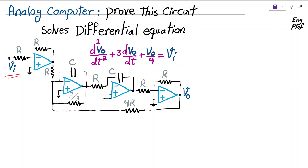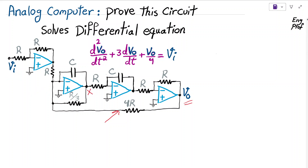Notice that there are two feedbacks: one via resistor 4R connecting Vout to input, and another one internally via resistor R/3 connecting node X to input.